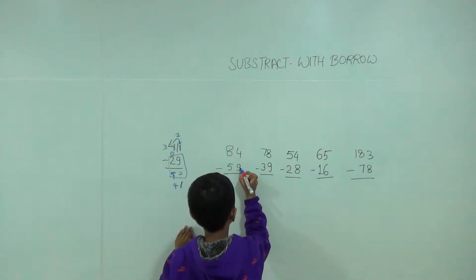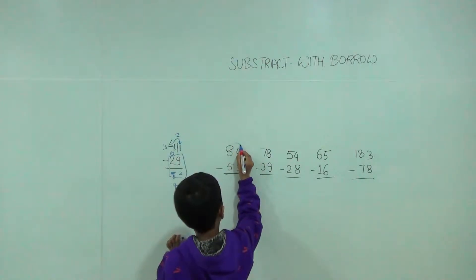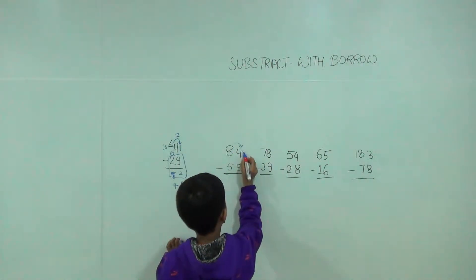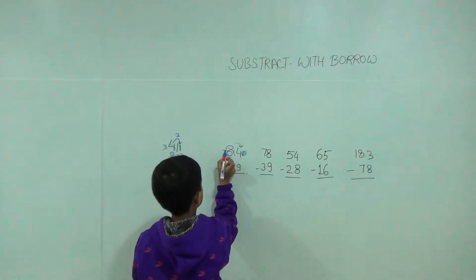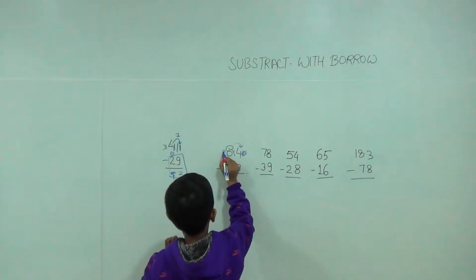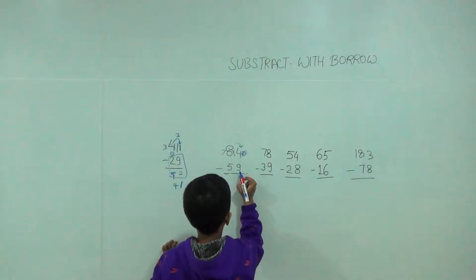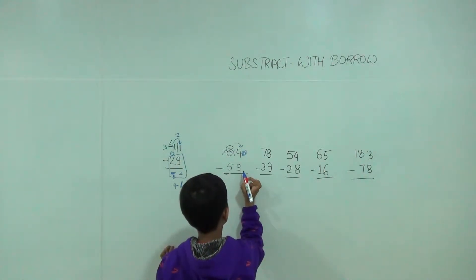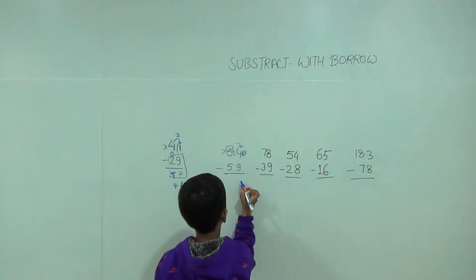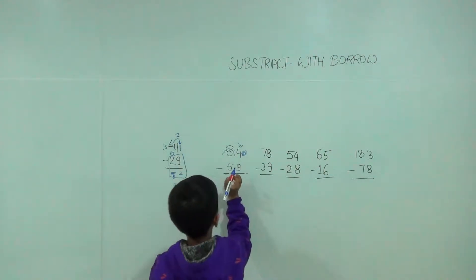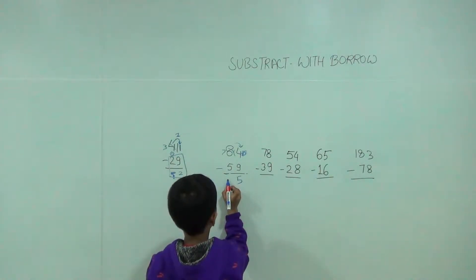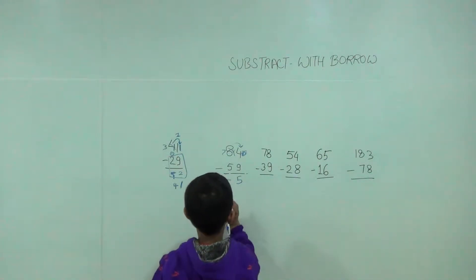4 is less than 9, so we will take 1 from here. So the answer would be 14 and it will become 9, it will become 7. Then 14 minus 9 is equal to 5. Then 12 minus 5 is equal to 2 (with borrow). So the answer would be 25. Let us check.